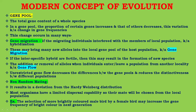This change occurs in many ways. Gene migration: if migrating individuals interbreed with members of the local population, it is known as hybridization, and these may bring many new alleles into the local gene pool of the host population. This phenomenon is known as gene migration. If interspecific hybrids are fertile, this may result in the formation of new species. The addition or removal of alleles when individuals enter or leave a population from another locality is known as gene flow. Unrestricted gene flow decreases the differences between gene pools and reduces the distinctiveness between different populations.